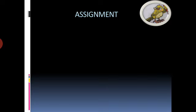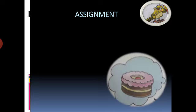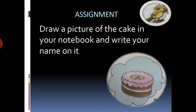Now, this is your assignment for today based on this lesson, Kitty the Naughty Cat. Have you seen this picture? This is a cake — a delicious cake. So draw a picture of the cake in your notebook, write your name on it, and color all the cakes.